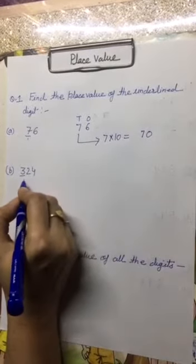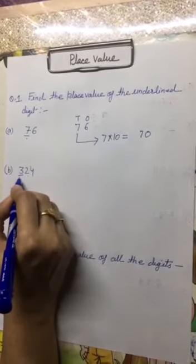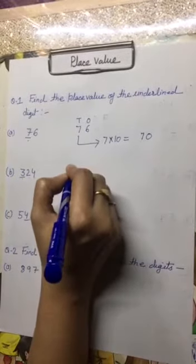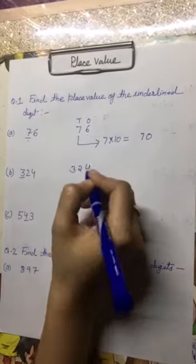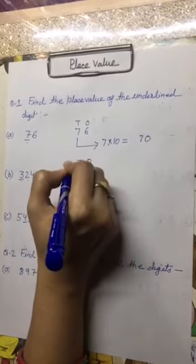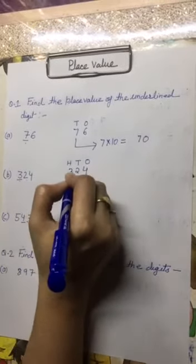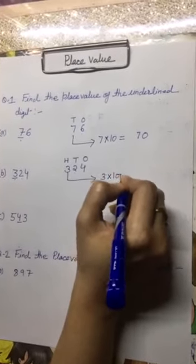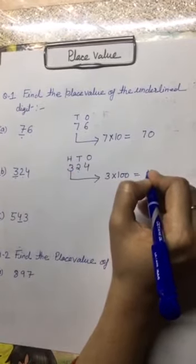Now question number B. The number is 324 and we have to find out the place value of number 3. So we will write the position of each number. Number 4 is in 1's place, number 2 is in 10's place, and number 3 is in 100's place. So it is a 3-digit number. The place value of number 3 is 3 into 100, because number 3 is in 100's place. So its place value is 300.